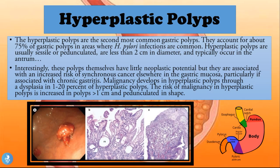Hyperplastic polyps are the second most common gastric polyp, accounting for about 75 percent of gastric polyps in areas where H. pylori infections are common — so they are associated with Helicobacter pylori. They are usually sessile or pedunculated, less than two centimeters in diameter, and typically occur in the antrum. Interestingly, these polyps themselves have little neoplastic potential.